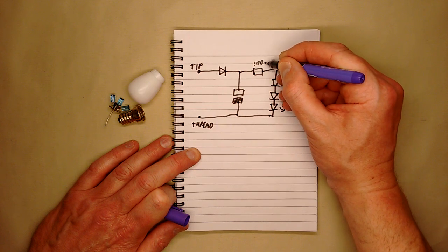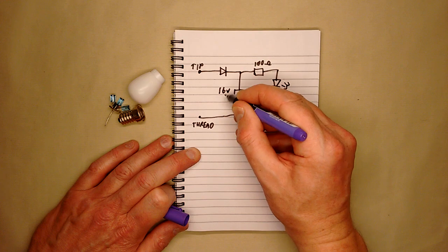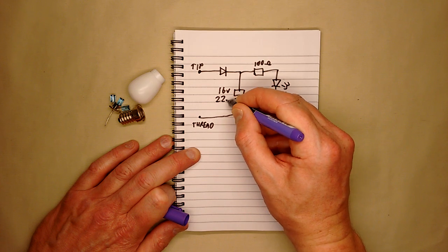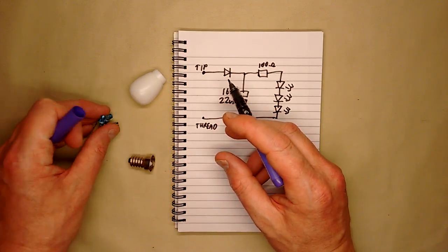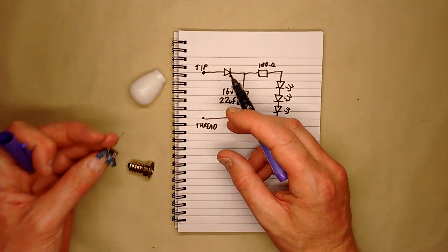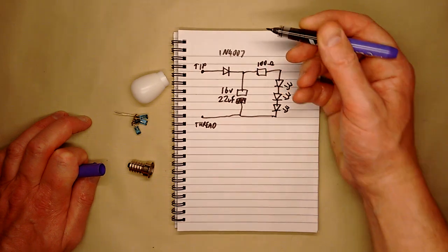So, that's 100 ohm resistor. It's 16 volt, 22 microfarad capacitor. And I'm guessing I didn't actually check because it's kind of buried down, but I'll guess that's a 1N4007 because that kind of fits if it's a main set.